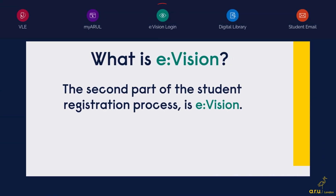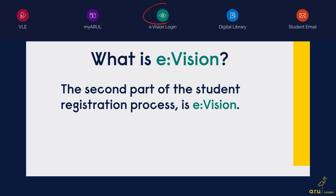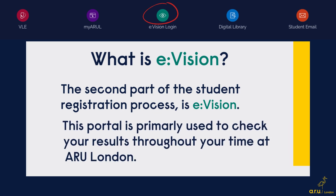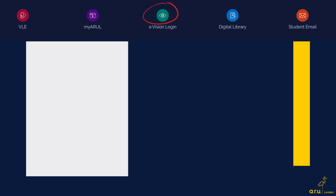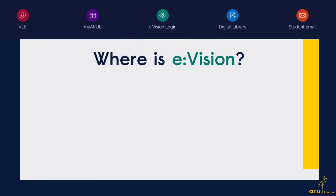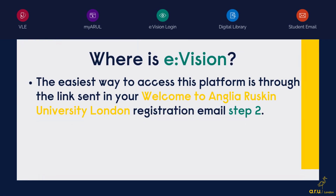The second part of the student registration process is eVision. This portal is primarily used to check your results throughout your time at ARU London. The easiest way to access eVision is through the link sent in your Welcome to Anglia Ruskin University London registration email, step 2.